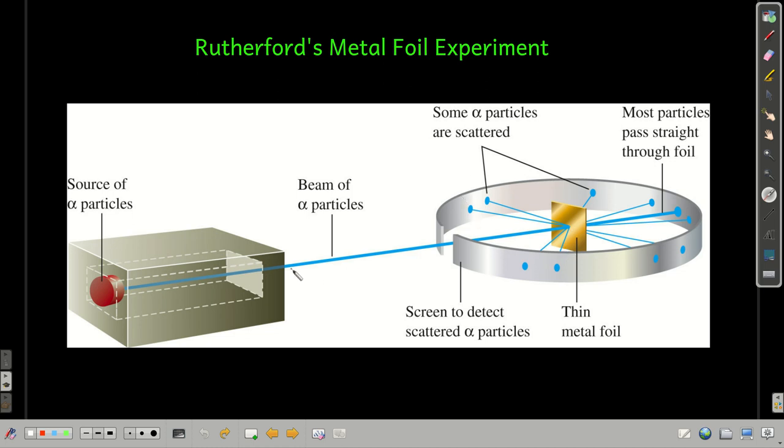And so, what he saw was when he shot this beam of alpha particles at this piece of metal foil, most of the time, the alpha particles went right through it, like it wasn't even there. But, you notice there were some marks here that showed that the alpha particles were deflected slightly, and even deflected to a large extent, bounced back almost, right?